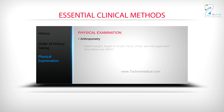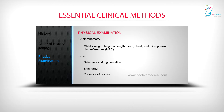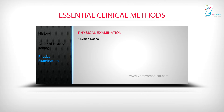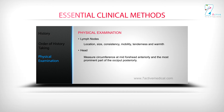Anthropometry: child's weight, height or length, head, chest, and mid-upper arm circumferences (MAC). Skin: skin color and pigmentation, skin turgor, presence of rashes. Lymph nodes: location, size, consistency, mobility, tenderness, and warmth.